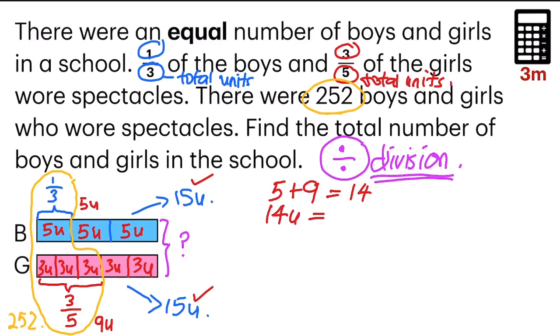And we can say that 14 units is equal to 252. And now we can do the division. 1 unit is equal to 252 divide by 14. You will get 18.